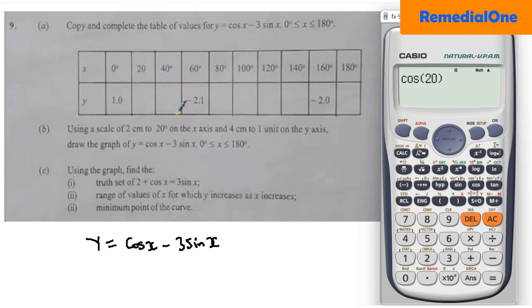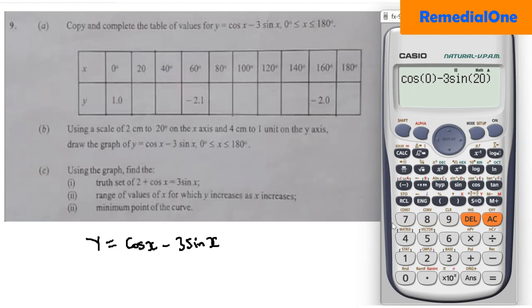They have done x = 0 for you. Now for x = 20, enter cos 20 minus 3 sin 20 and that gives you negative 0.08. Rounded to one decimal place, that is negative 0.1. For x = 40, enter the same expression with 40 and you get approximately negative 1.2 — remember when the next digit is 5 or more you round up.